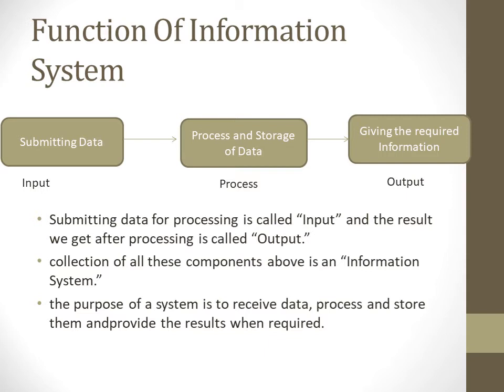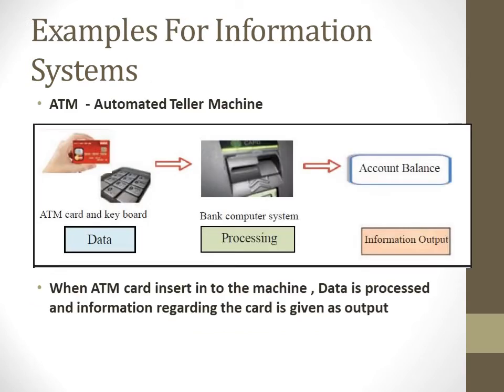The whole collection of this process is called an information system. The purpose of an information system is to retrieve data, process it, store it, and provide necessary results or support necessary decisions for organizations when required.